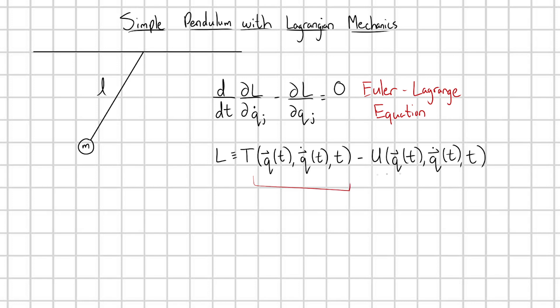All that we're really saying here is that my kinetic and potential energies are functions of: one, the coordinates of my system; two, the time derivatives of those coordinates; and three, time itself. But in reality, our coordinates are really just functions of time as well, because at the end of the day, we want to find how this object is moving through space as a function of time.